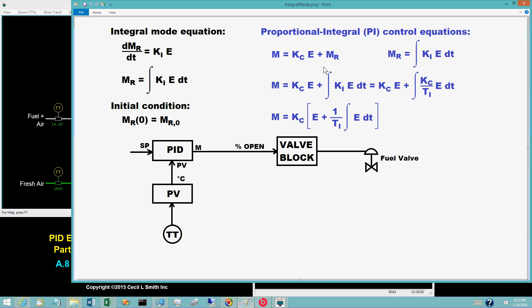Combining the integrated equation of the integral mode with the proportional plus bias equation for the proportional mode gives a PI controller. Many computational procedures use the individual equations for each mode.